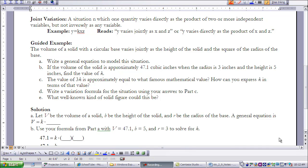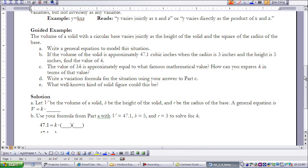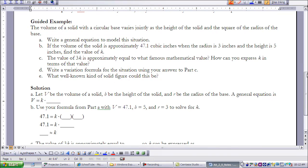So we're going to work through a guided example here of a joint variation. The volume of a solid with a circular base varies jointly as the height of the solid and the square of the radius of the base. So to begin with, we need to write a general equation for that.